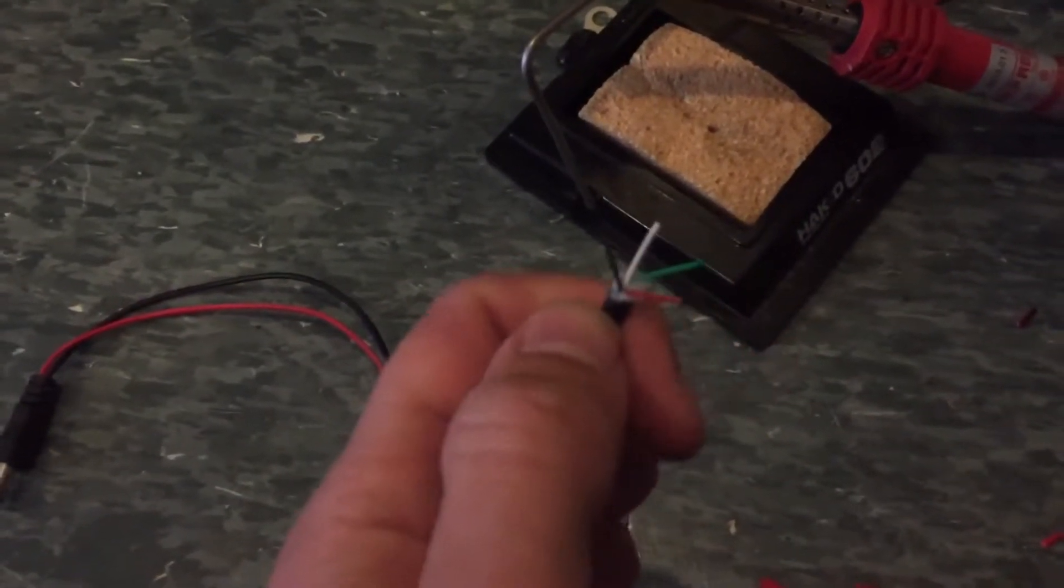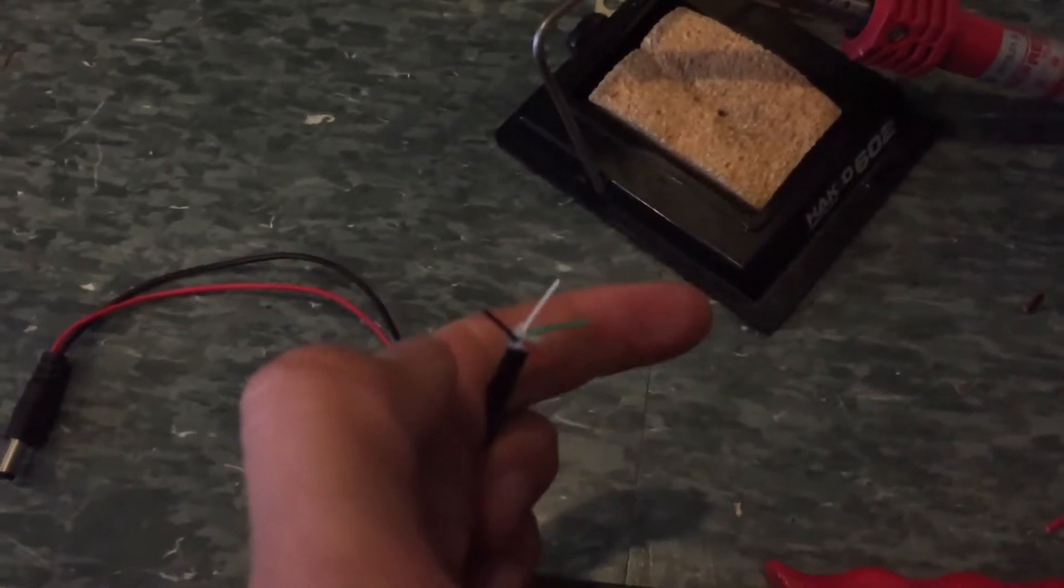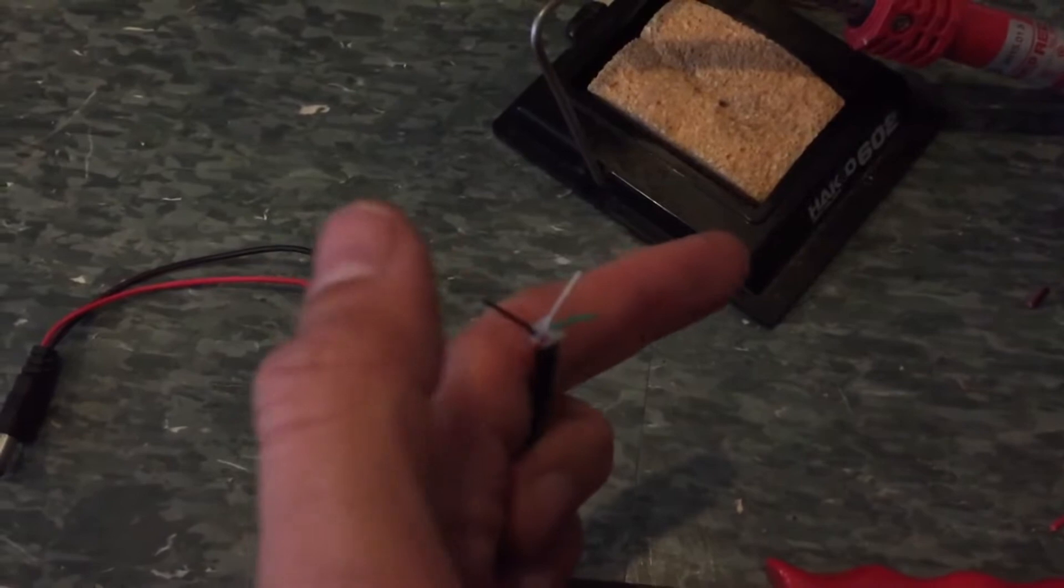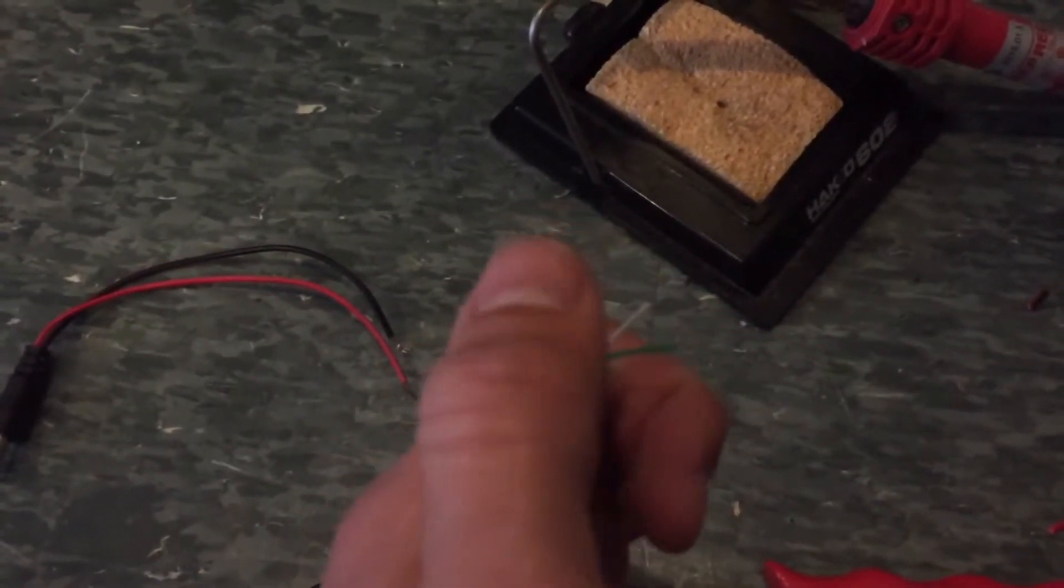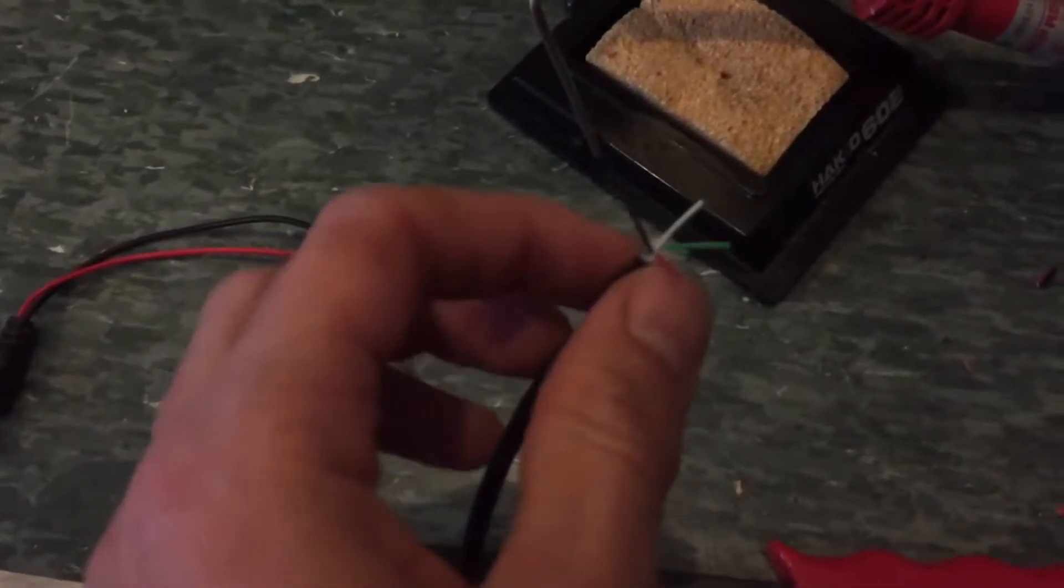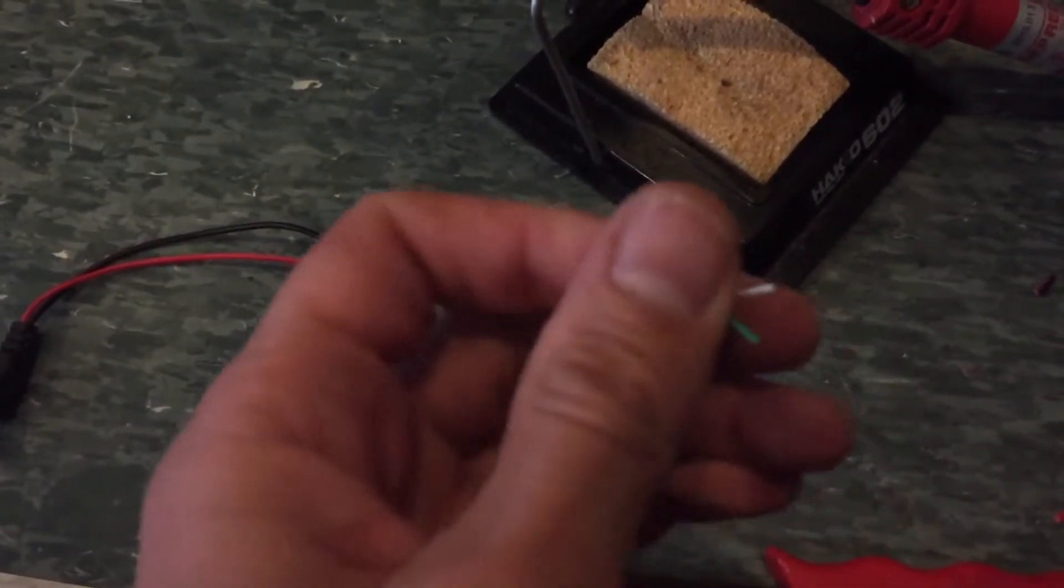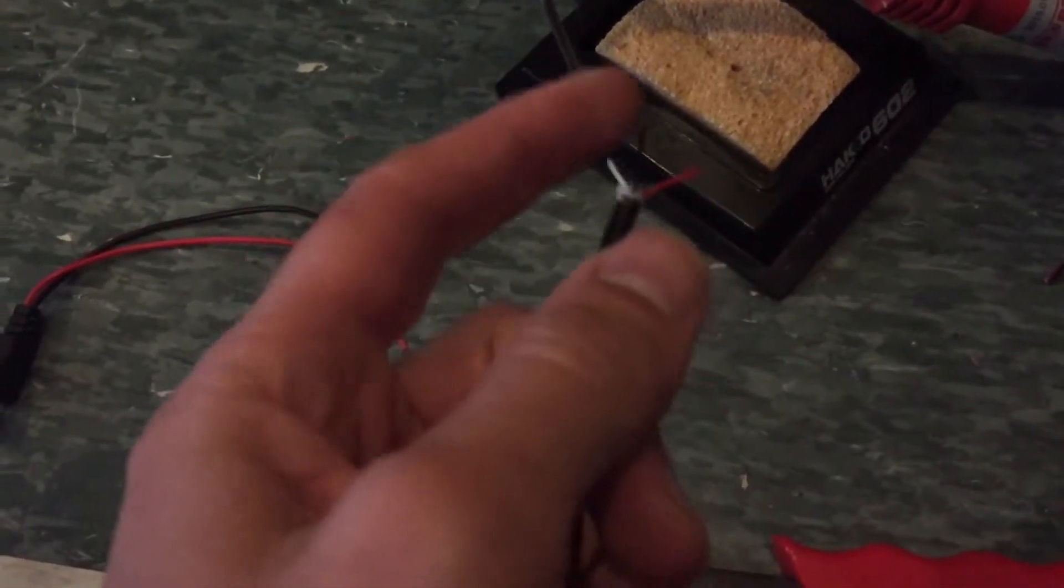And the white and green, these are your data cables. So whenever you plug in anything that requires micro USB or whatever it is and you're actually transferring data, say for like an external hard drive, these are what transfer the data, these two, the white and green right here. And these are the ones that power everything.